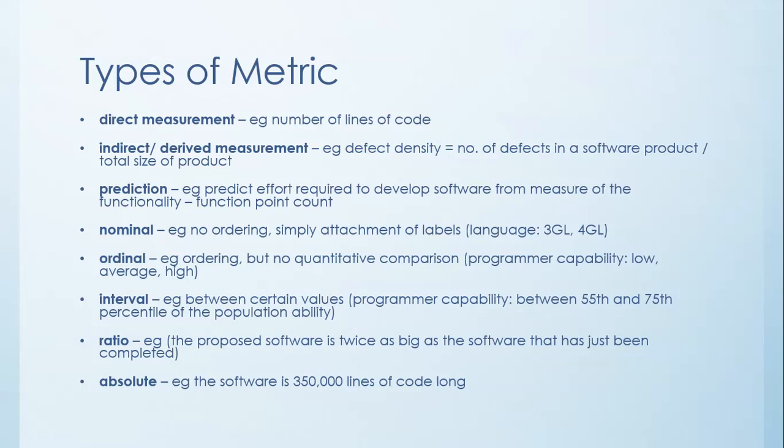The next kind of metric are interval metrics. So that's like between certain values. So programmer capability between the 55th and 75th percentile of the population ability. That's a way we could actually measure it.